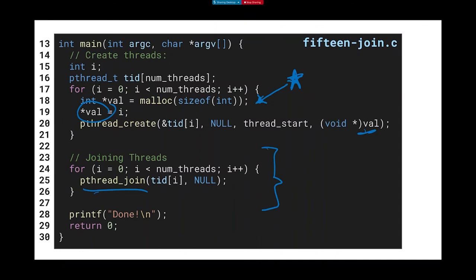What do we expect to happen now? We'll see all numbers 0 through 14 and then 'done.' Will they always be in order 0 through 14 though? No — I'm not specifying any order between threads. I've created all 15 threads at once and I'm letting the CPU run all 15 threads. There are no specified dependencies between them.